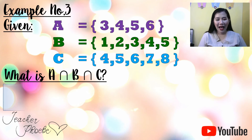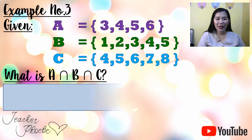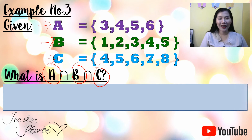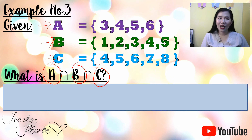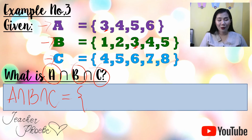In this case, we need elements that are common to all three sets — meaning you can find the element in A, in B, and also in C. Take note: it must appear in all three sets; it is not enough to appear in only two. So the intersection of A, B, and C is equal to what? Check A: does 3 have a match in C? No — so 3 is excluded.